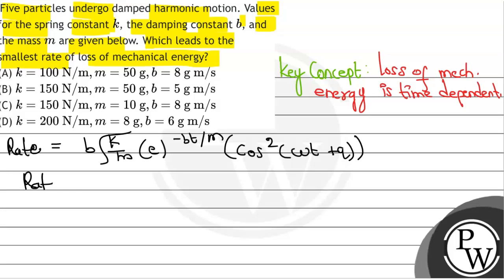So what do we see? The rate is directly proportional to b times the square root of k over m times e raised to the power minus bt over m. So the rate is proportional to b times the square root of k over m. What is our constant?